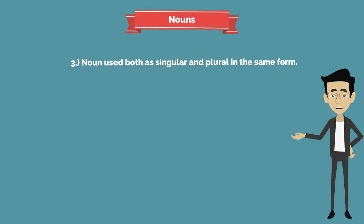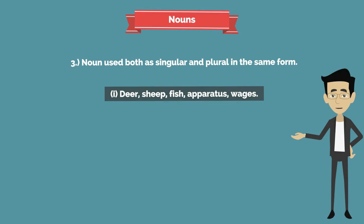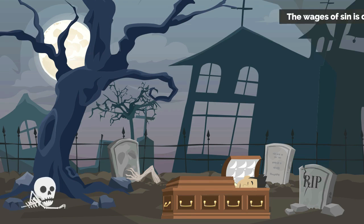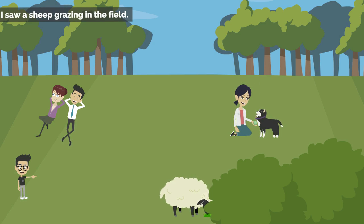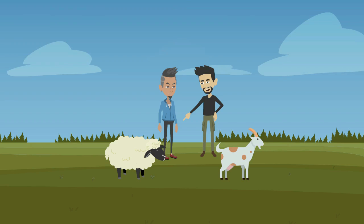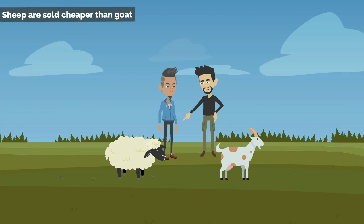The third category is nouns used both as singular and plural in the same form. First group: deer, sheep, fish, apparatus, wages. Examples: 'The wages of sin is death.' 'The wages of the workers have been raised.' 'I saw a sheep grazing in the field.' 'Sheep are sold cheaper than goat.'